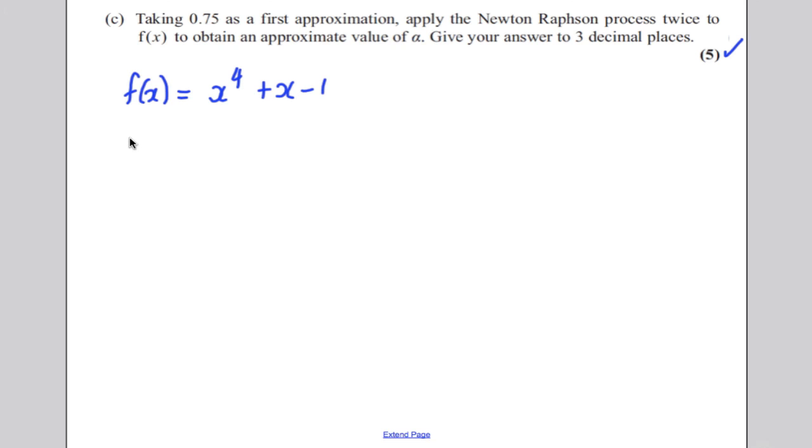Now, get the easy mark, because in the Newton-Raphson, you need the derivative of the function, so get your easy mark by writing your function, and then writing the derivative, which would be 4x cubed plus 1. You're going to apply a formula, so state the formula. The Newton-Raphson formula says x(n+1) is equal to x(n) subtract f of x(n) over f dashed x(n).